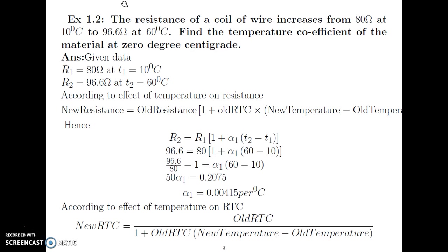What is given? R1 is 80 Ohm at T1 equal to 10 degree Celsius, and R2 is 96.6 Ohm at T2 equal to 60 degree Celsius. What is asked? We have to calculate the RTC at 0 degree Celsius.